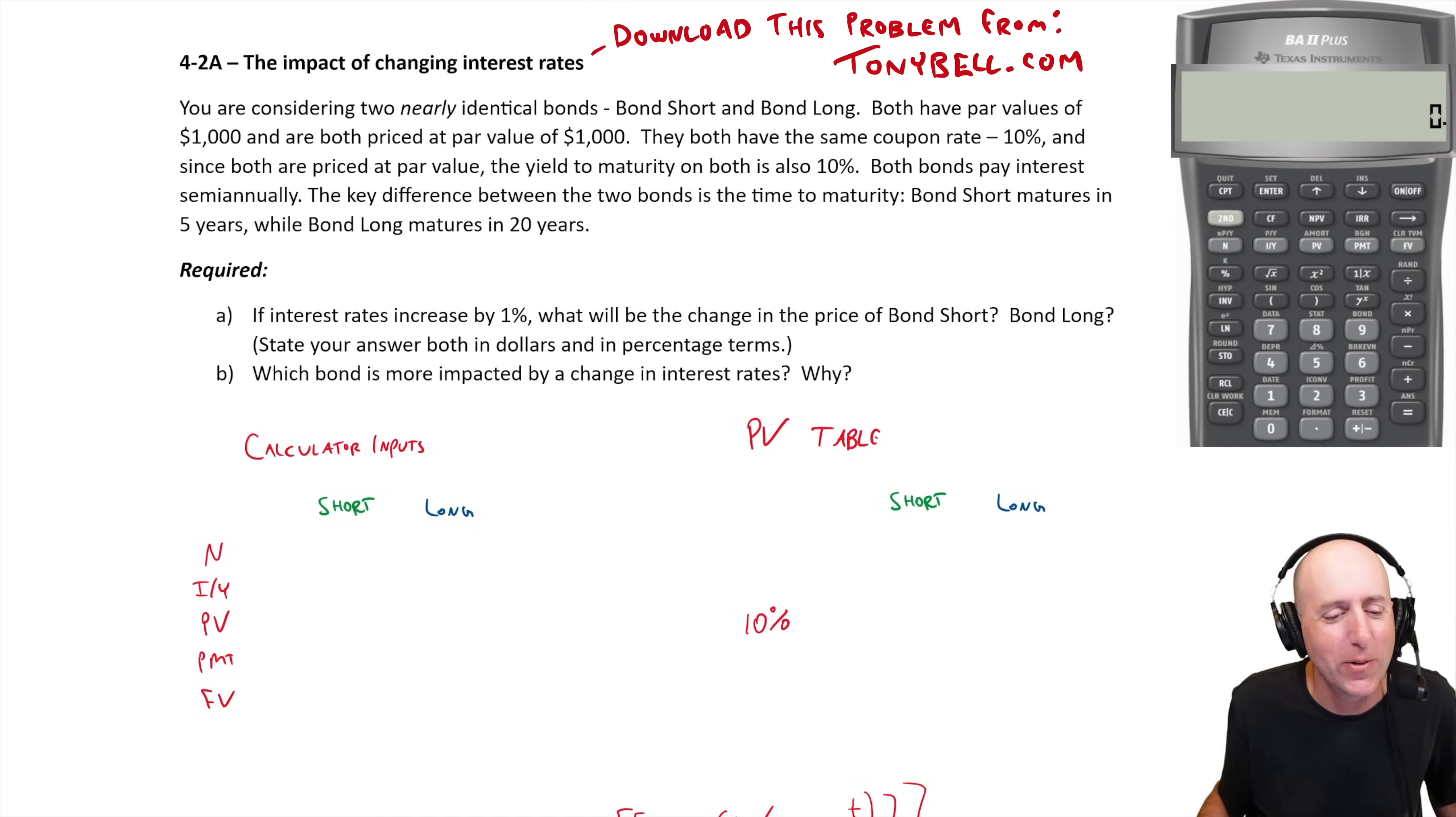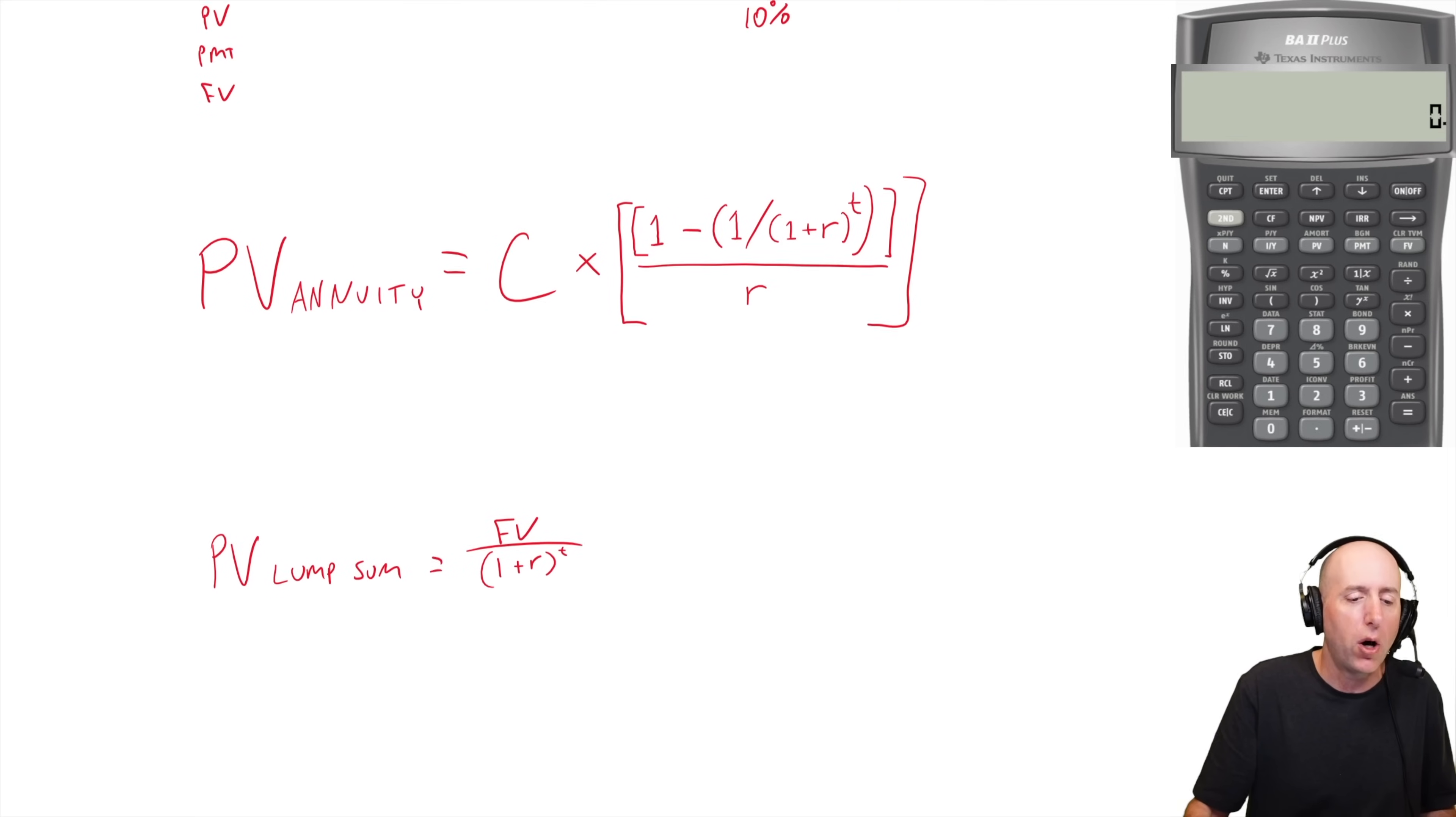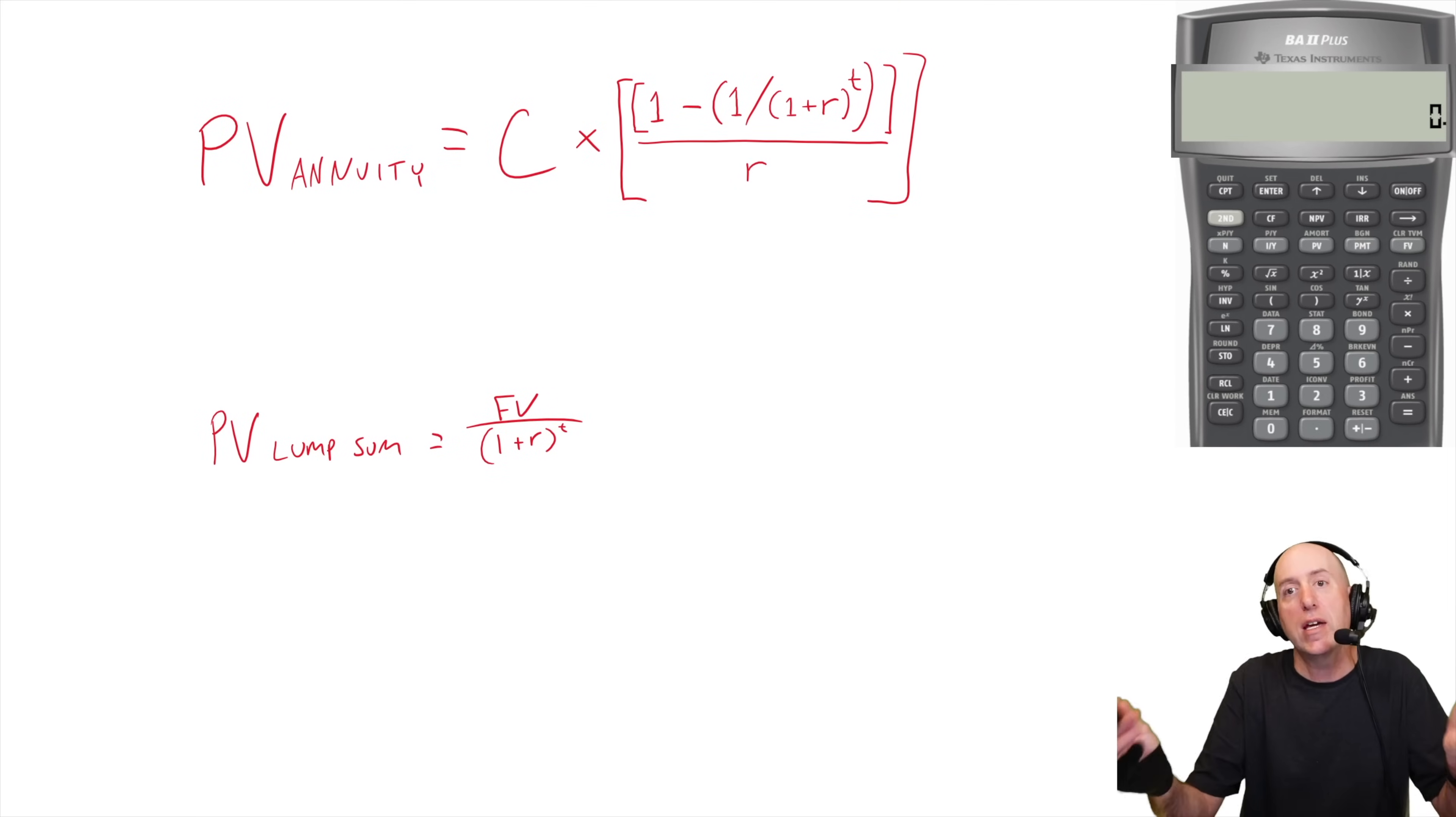Let's take a look at problem 42a. We're playing around with interest rates and how they affect bond prices. Remember, the price of the bond is just the present value of all of the interest payments you're going to get. Typically every six months you get some interest payments, so we do PV of an annuity.